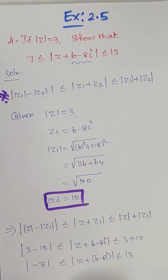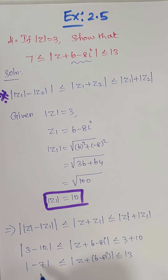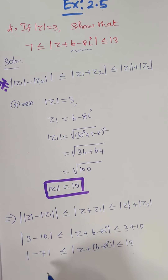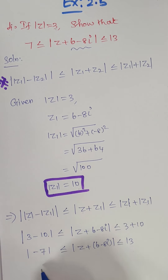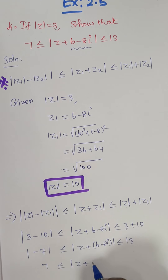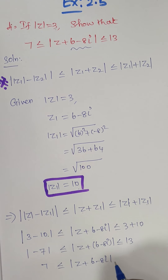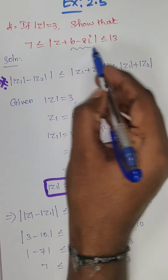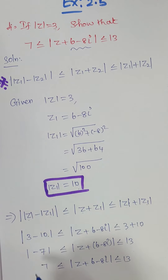Since mod of any value is always positive, mod of minus 7 equals 7. Therefore, 7 is less than or equal to mod of z plus 6 minus 8i, which is less than or equal to 13. This completes the proof.